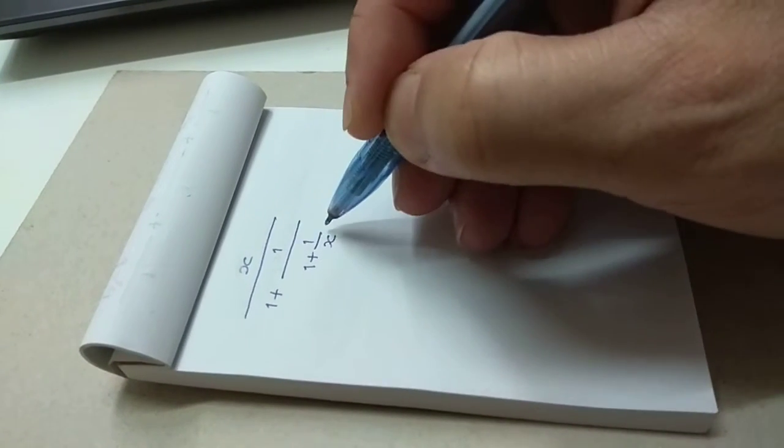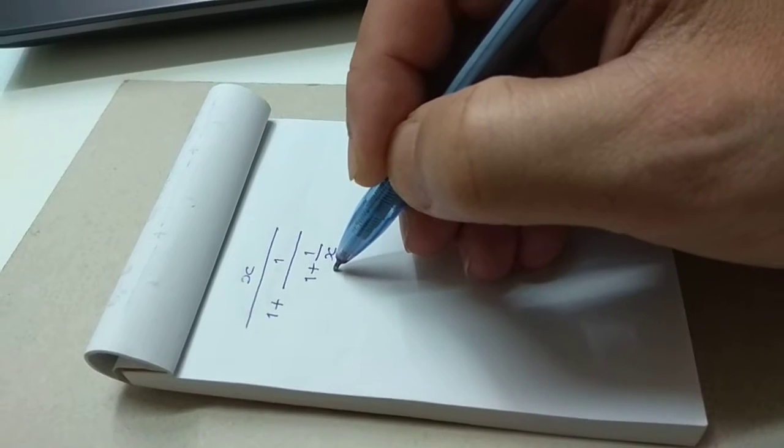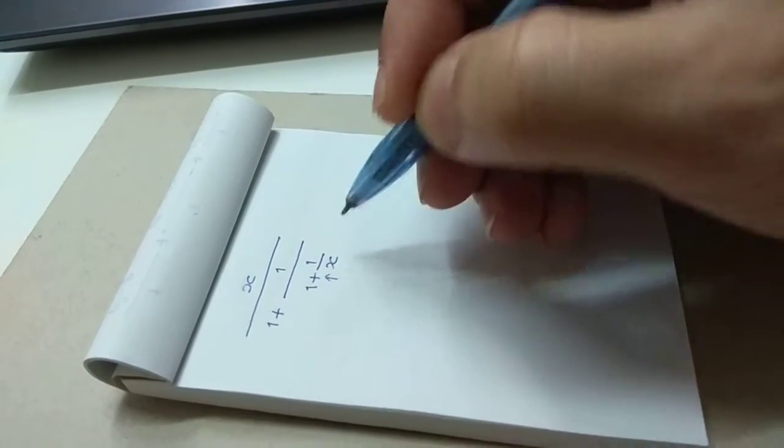Here, there, what operations do we have to perform? We have to divide 1 by x. Then, add with 1.